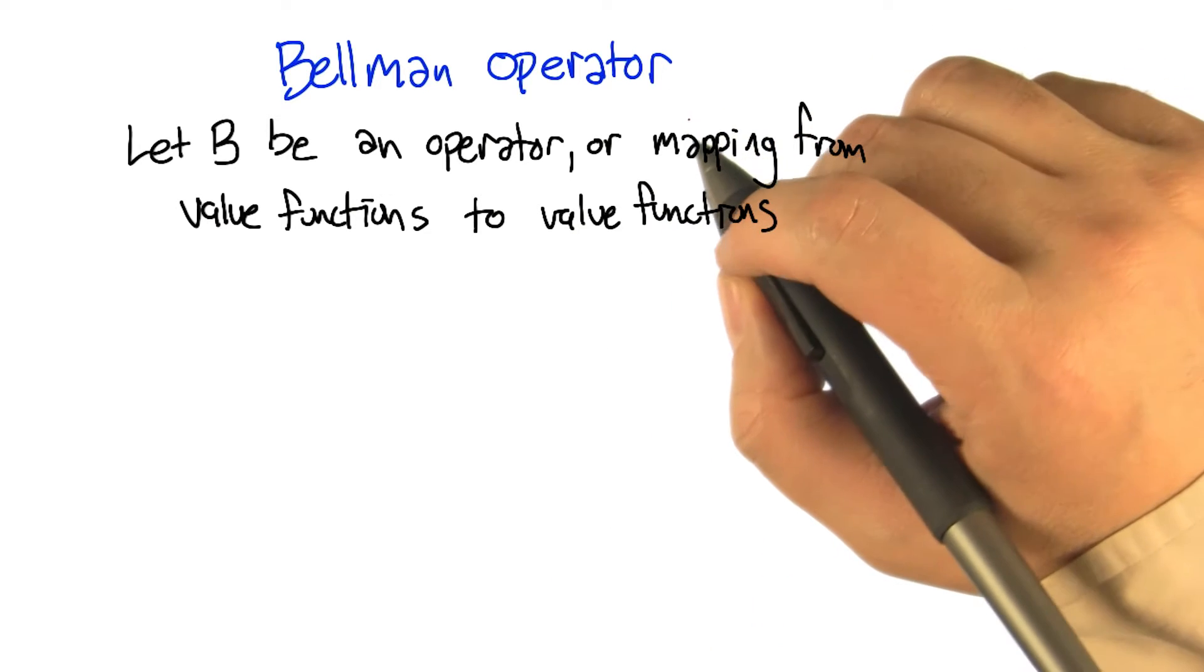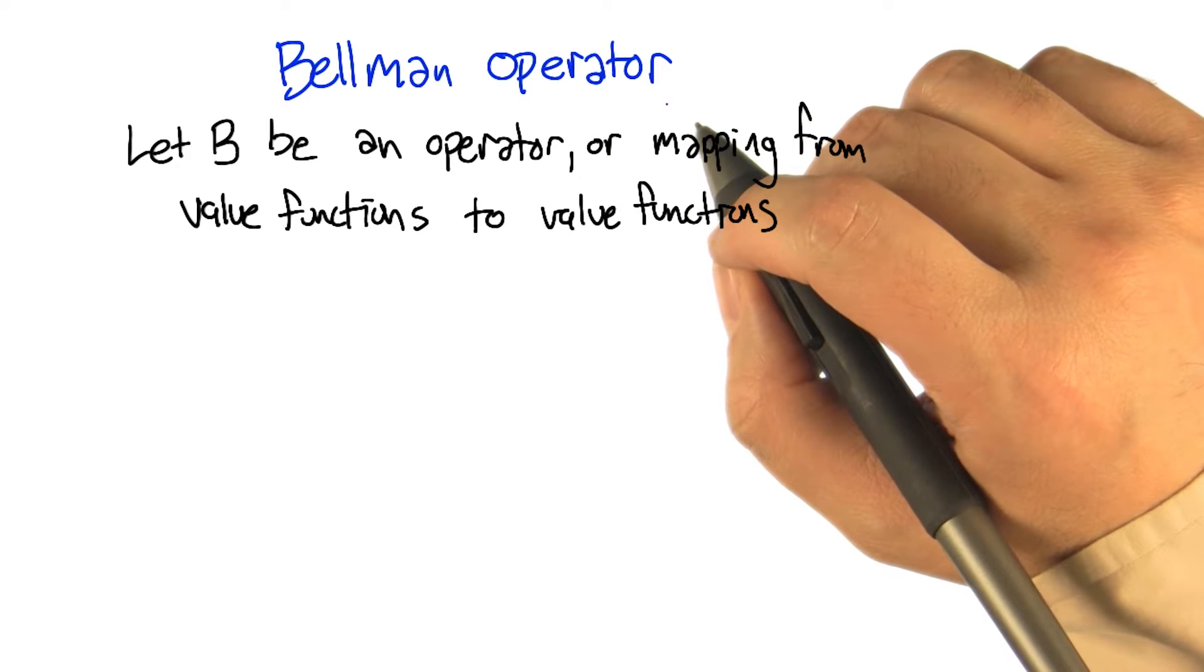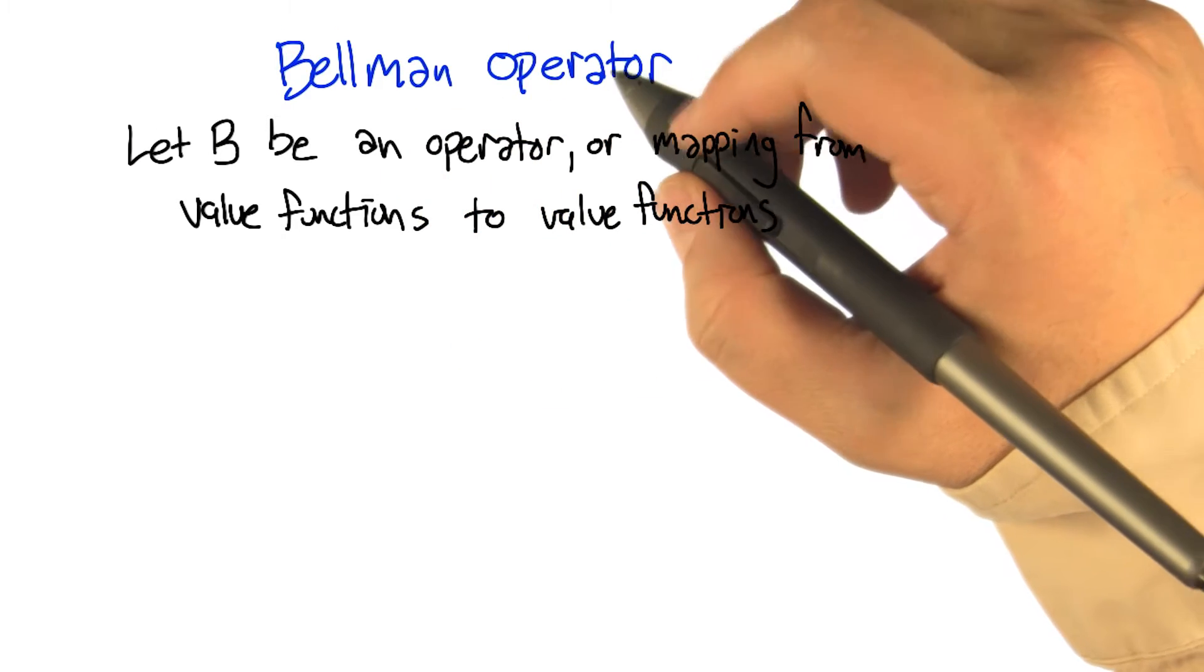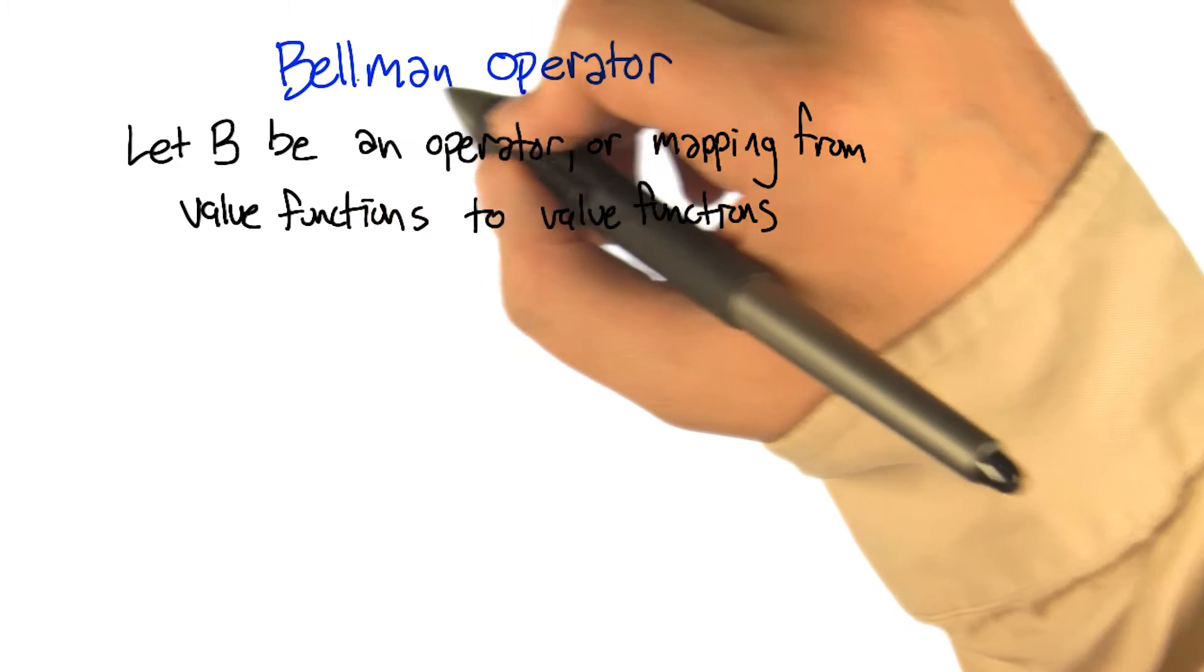To make the notation come out relatively cleanly, to minimize the number of subscripts that I'm going to mess up, we're going to introduce a notation called operator notation, functional notation, and we're going to introduce, in particular, a Bellman operator.